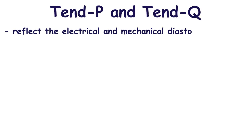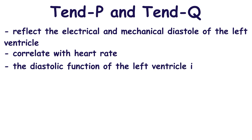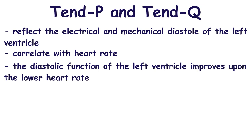Actually, both of these intervals reflect the electrical and mechanical diastole of the ventricle and they well correlate with heart rate. The TpP interval changes upon the heart rate, and the diastolic function of the left ventricle improves at lower heart rates. In this case, there is more time for the left ventricle to be filled with blood during diastole.